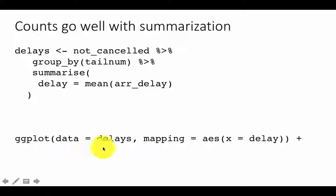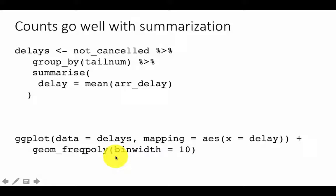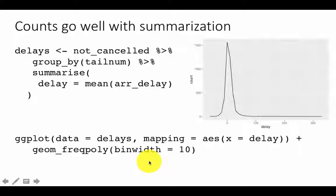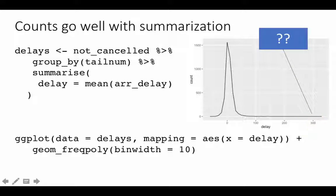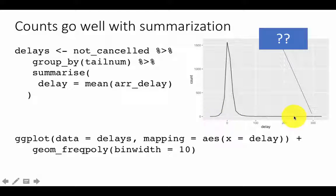Then we do a ggplot with geom_freqpoly — a frequency polygon, like a bar chart but with a line — with binwidth set appropriately. The plot clearly shows that most flights have a delay close to zero, between 0 and 10 minutes. There is a rapid drop-off and then higher levels of delay for some flights. But it looks a little unusual — some flights have 300-minute delays, which is a five-hour delay. This could be due to data errors, rerouting to another airport, or other unusual conditions.